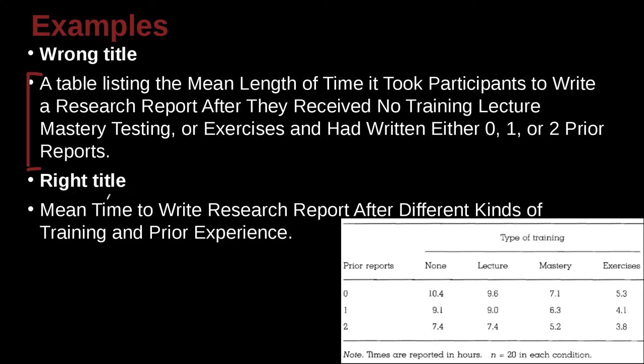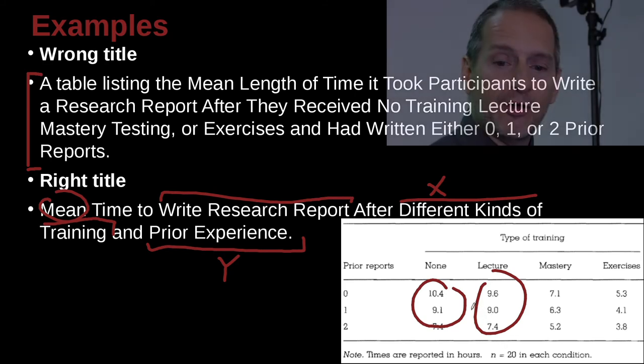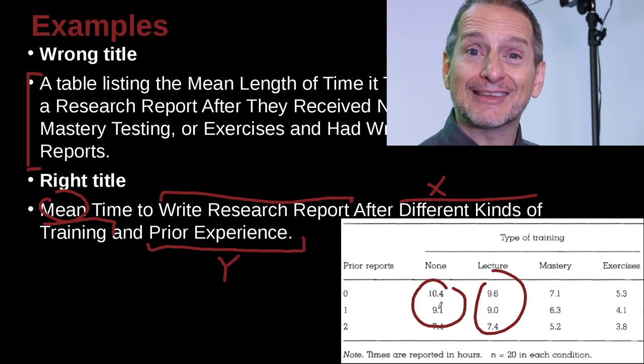Mean time. Why mean? Because inside here, these numbers are means to write research report. That means what did they do? What was the task? It was to write the research report. And what was the variable that was manipulated? It looks like it was different kinds of training. So the different groups had different training, and the different groups had different experience. So these are like variables, right? So this is like variable X. This is like variable Y. And then the mean time is the measurements that's inside the table. That's pretty straightforward. That's a nice way to help me quickly see what is this table about. That's the key point.